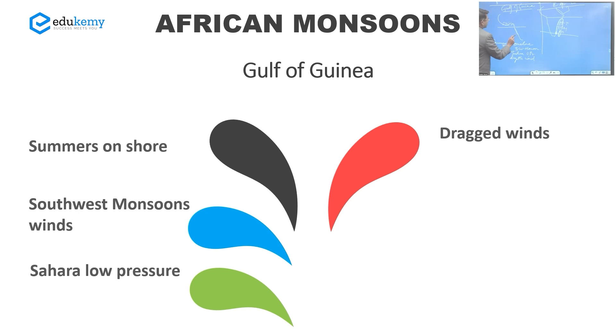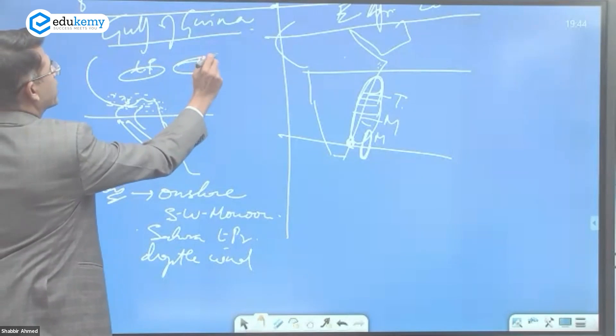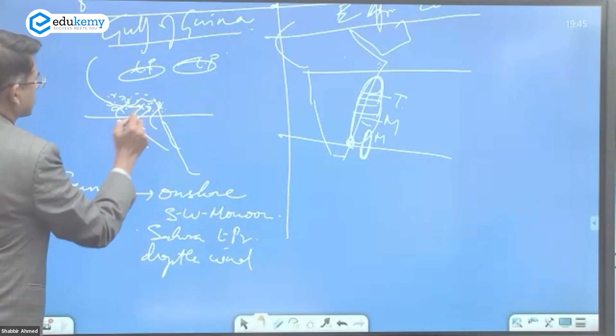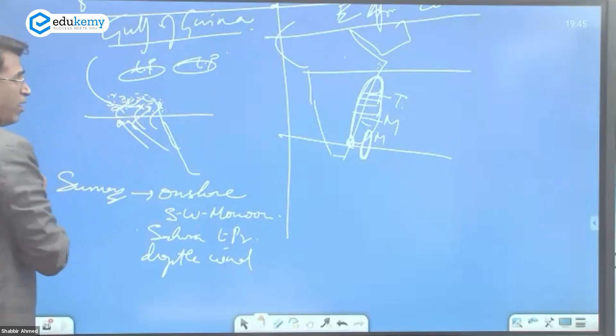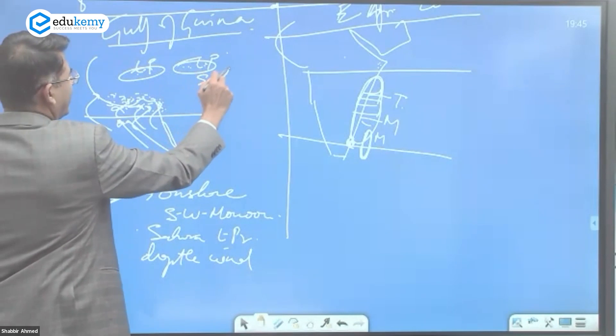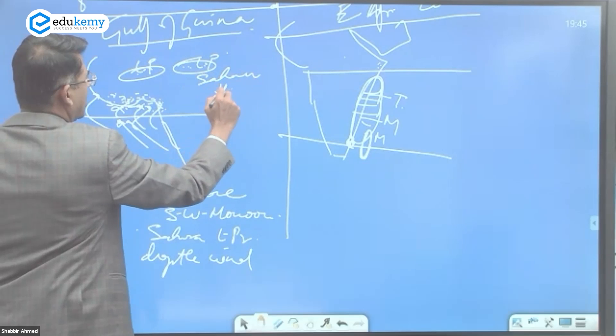Northeast trades - they can turn like this, they turn like this because of very intense heating. This can become some local low pressure. Summer summers onshore southwest monsoon. They will turn like this and this area can have rainfall. They will turn like this and this area we have got low pressure because of intense Sahara heating.